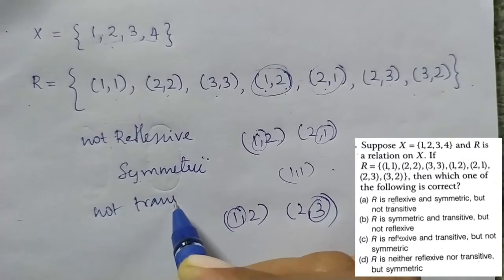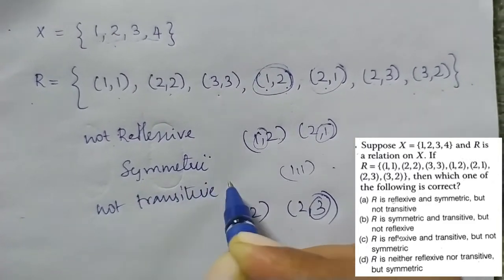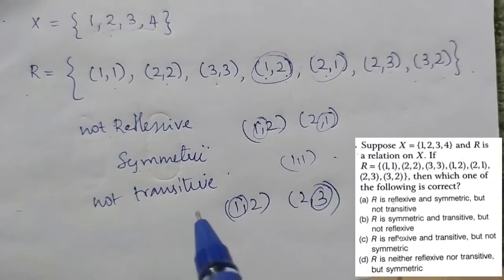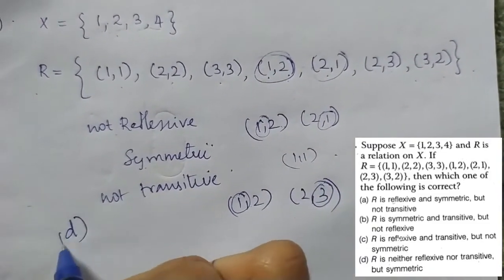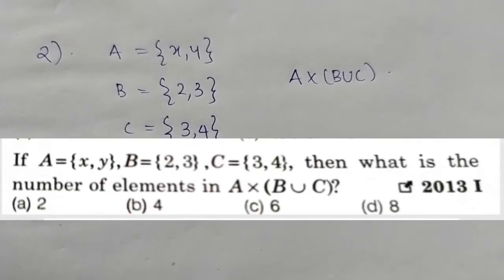Then option D satisfies: it is neither reflexive nor transitive, but it is symmetric. Option D is the right answer.